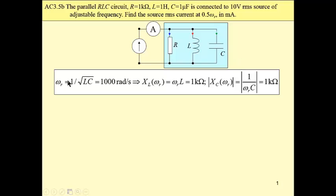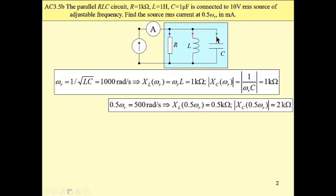If we change this frequency from ω_r to 0.5ω_r, meaning 500 radians per second, then obviously the reactance of our coil will be half, X_L(0.5ω_r) = 0.5kΩ, and the reactance of our capacitor will be two times greater, X_C(0.5ω_r) = 2kΩ.